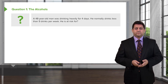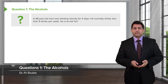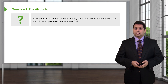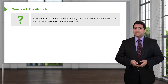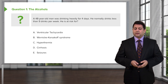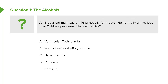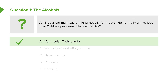Let's go to a question. A 48-year-old man was drinking heavily for 4 days. He normally drinks less than 9 drinks per week. He is at risk for one of five conditions. The answer is ventricular tachycardia. We're worried about ventricular tachycardia because it is one of the acute effects of heavy drinking. Chronic heavy drinkers are at risk of Wernicke-Korsakoff syndrome or other conditions, but acute toxicity — ventricular tachycardia — is the concern here.